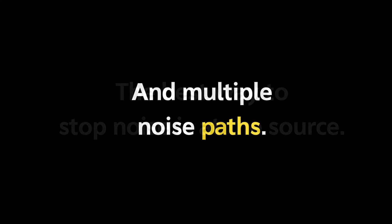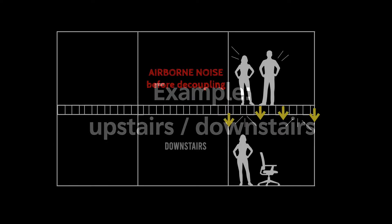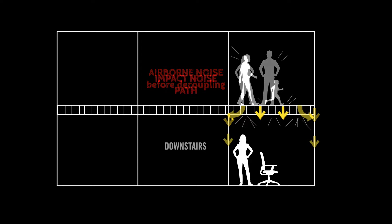The best way to stop noise is at the source, but you also need to take a look at the path of the noise. Let's look at an example with an upstairs and a downstairs apartment. Let's say the downstairs neighbor hears conversation noise and TV, and they're really bothered by impact noise from footfalls.